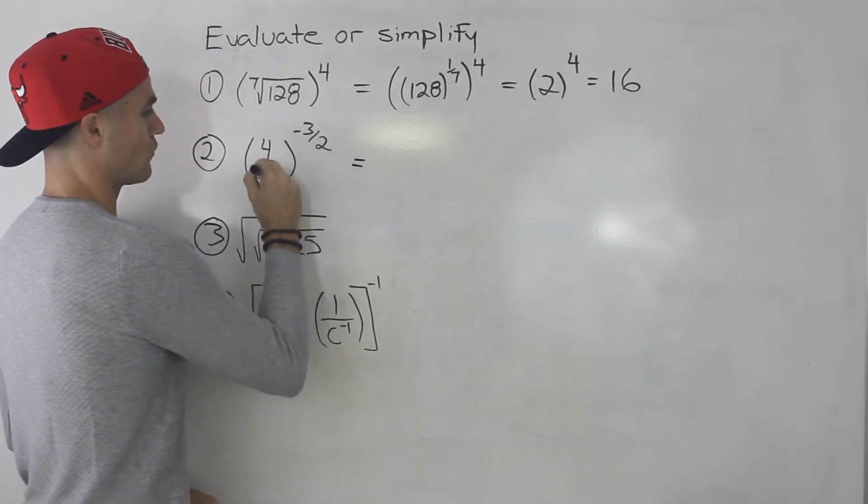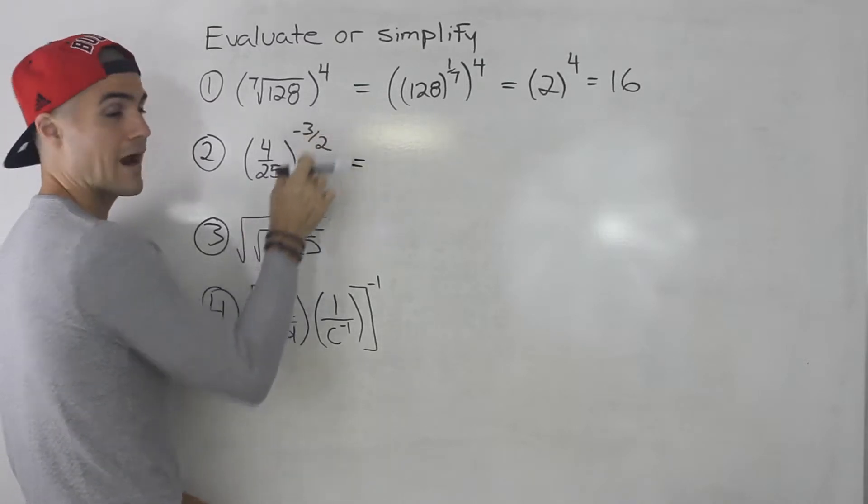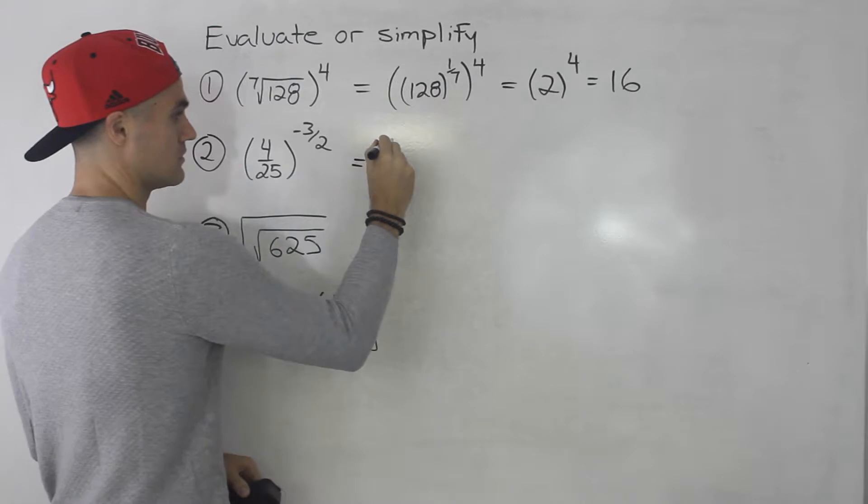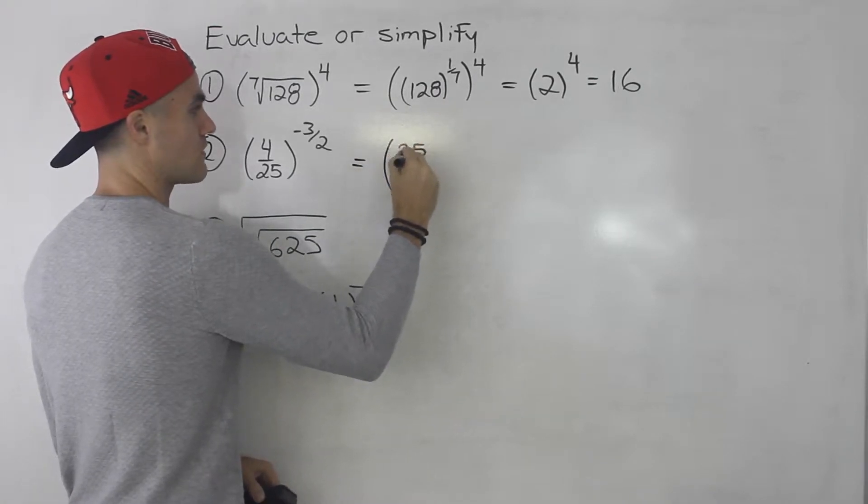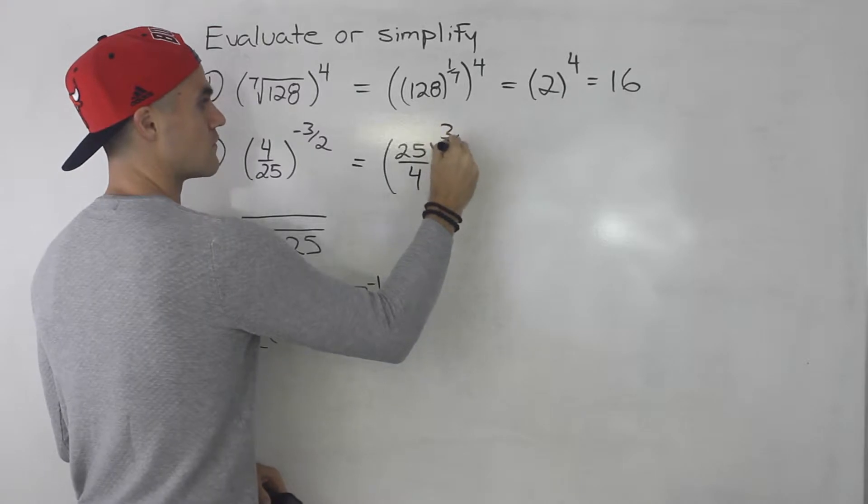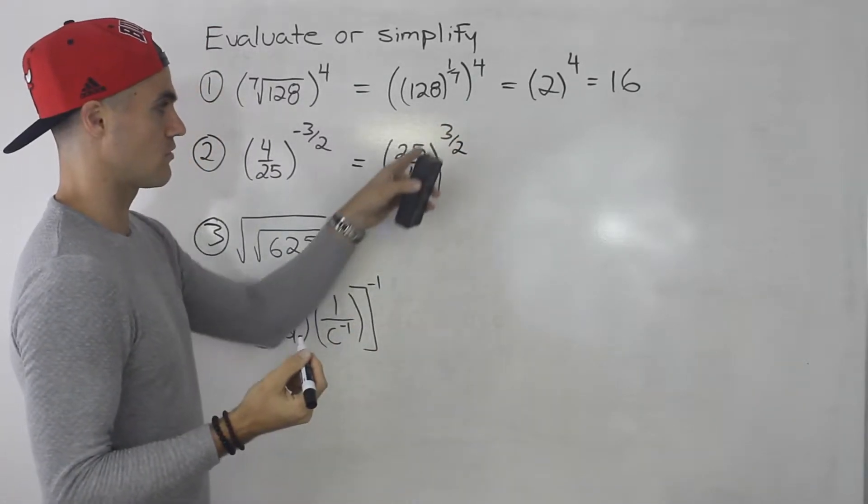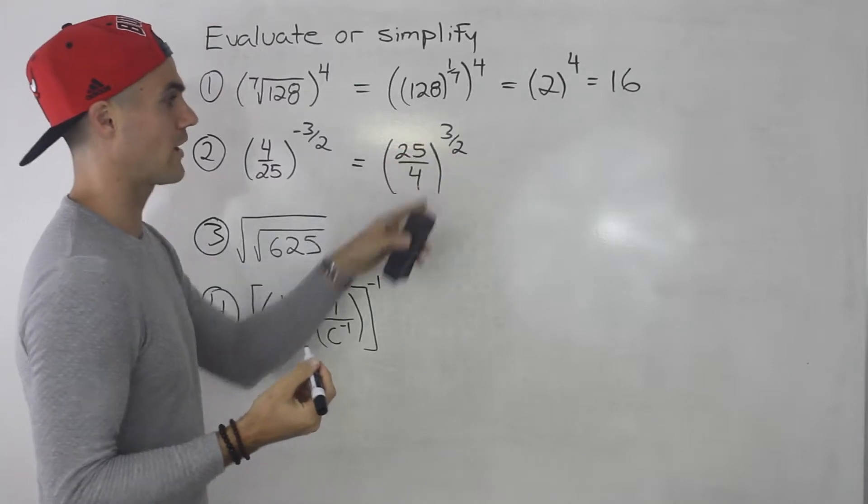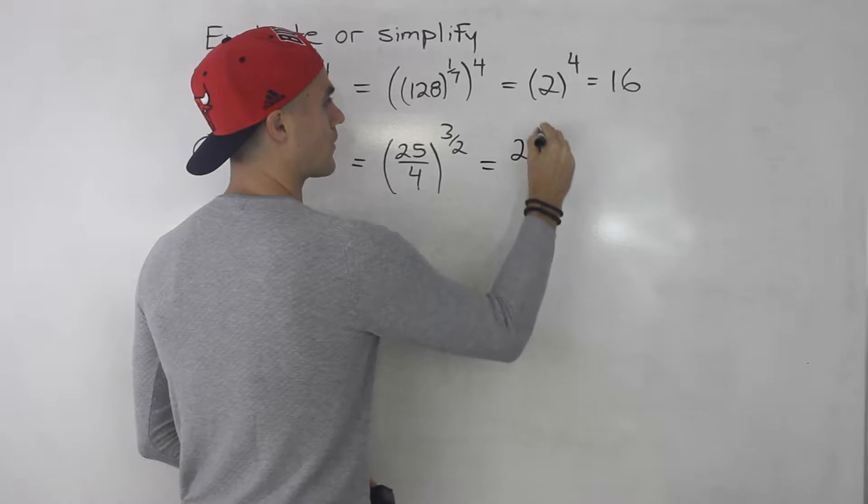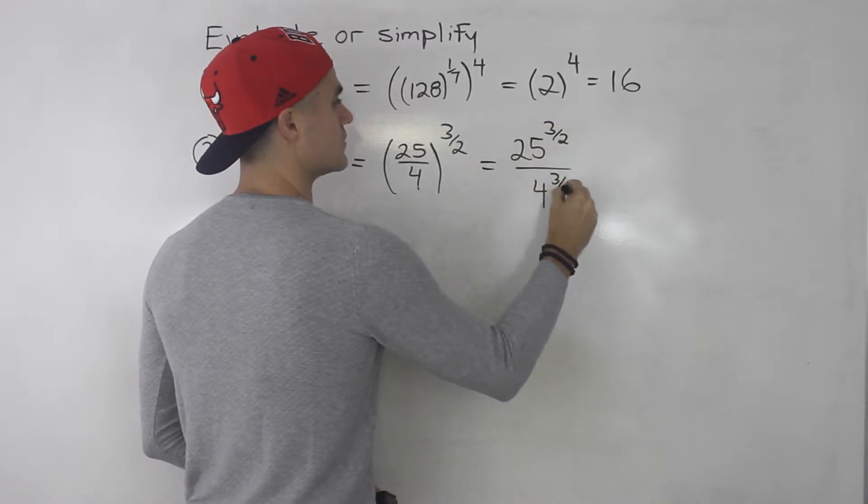Number two, we got 4 over 25 to the power of negative 3 over 2. So we have a fraction to the power of a negative exponent. What do we do then? Flip the fraction. So we got 25 over 4 to the power of positive 3 over 2. And then from here, we can distribute that exponent to the numerator and the denominator. So we'd have 25 to the power of 3 over 2 all over 4 to the power of 3 over 2.